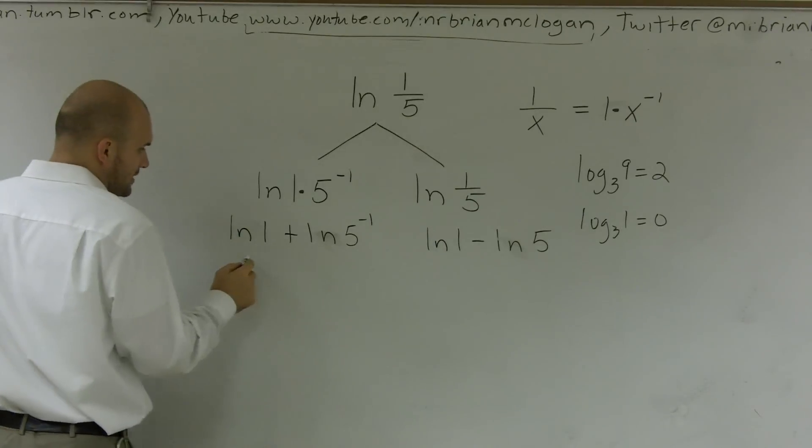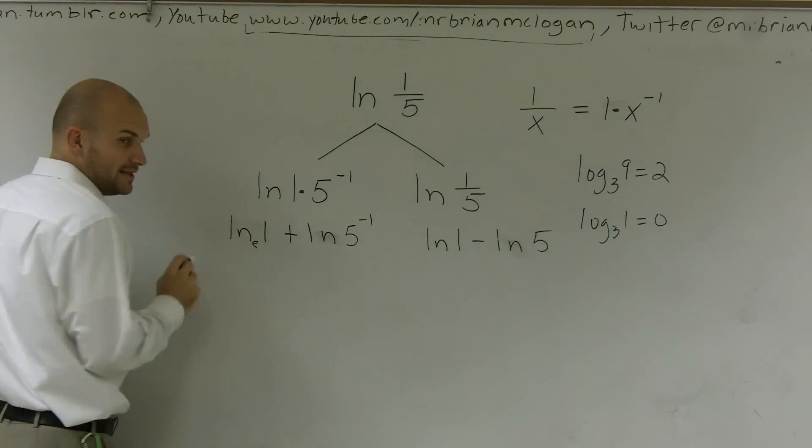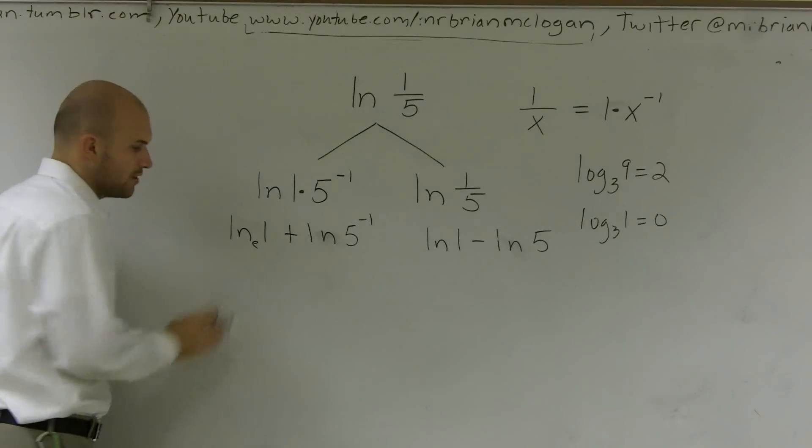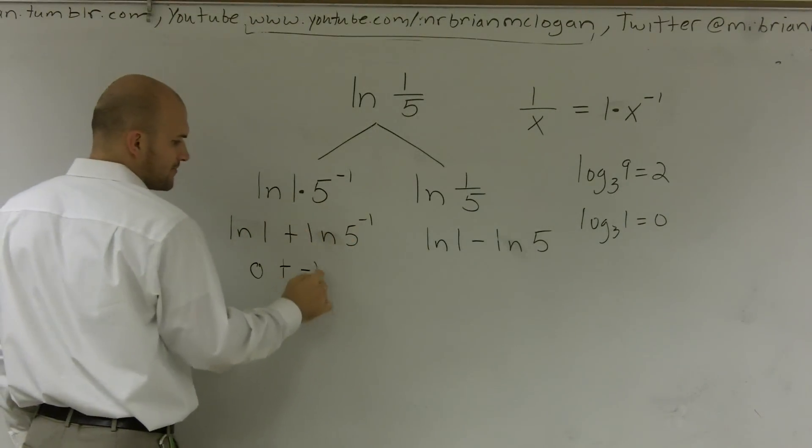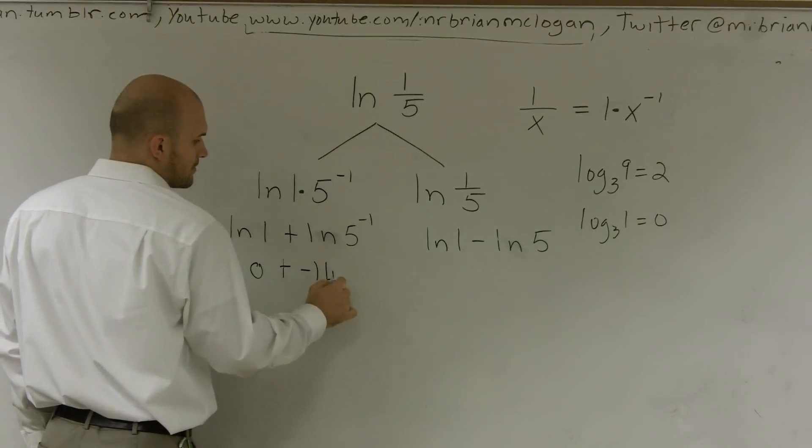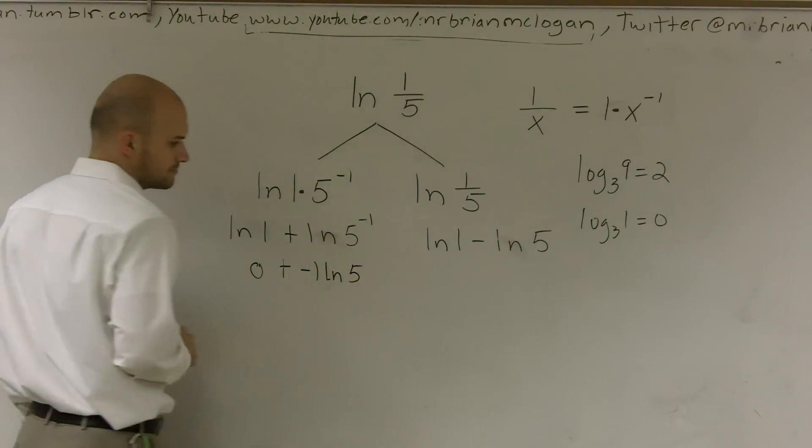So here, I can say ln of 1, e raised to what number gives you 1? 0. Plus, I can bring my exponent in front, right? So here, all I have is negative 1 times ln of 5. Well, I know that answer is just going to be negative ln of 5.